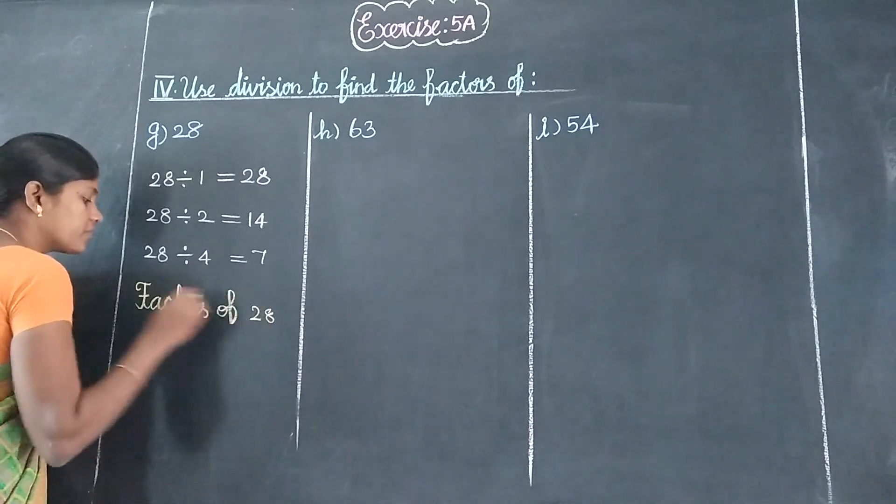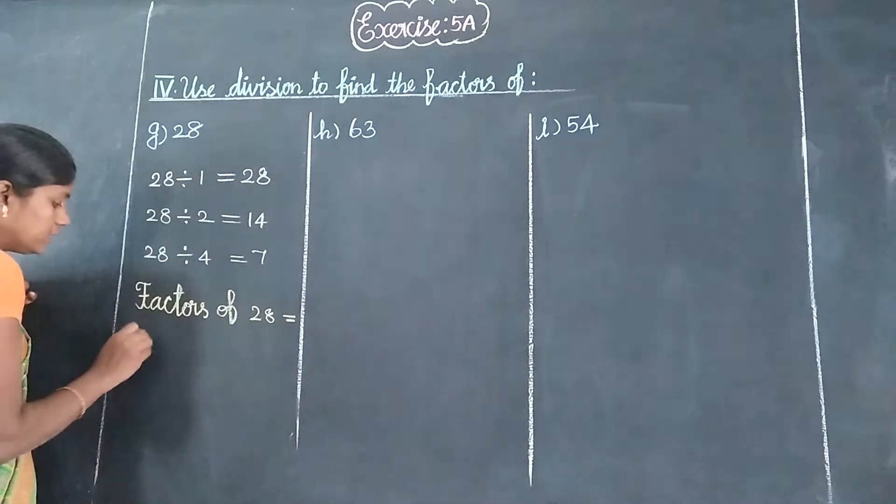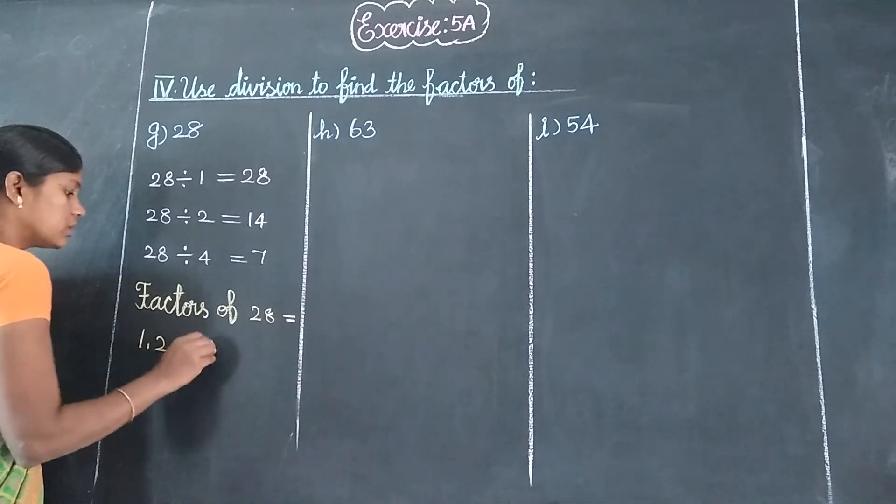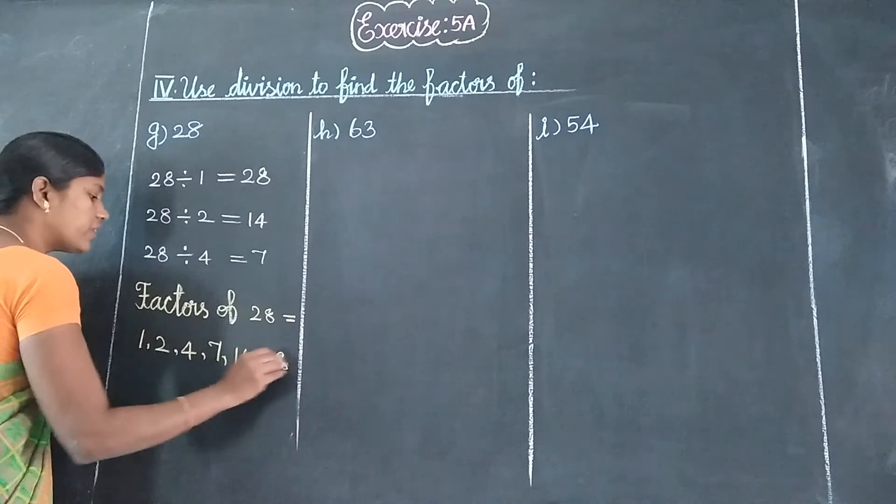Factors of 28 equal 1, 2, 4, 7, 14, and 28.